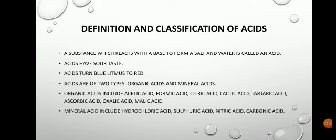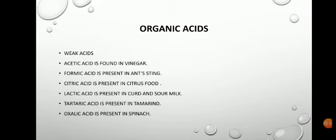Organic acids include acetic acid, formic acid, citric acid, lactic acid, tartaric acid, ascorbic acid, oxalic acid, and malic acid. Mineral acids include hydrochloric acid, sulfuric acid, nitric acid, and carbonic acid. Organic acids are basically weak acids — their pH is close to neutral. Because they are closer to neutral pH, they are weak acids, meaning consuming them will not adversely affect your health.